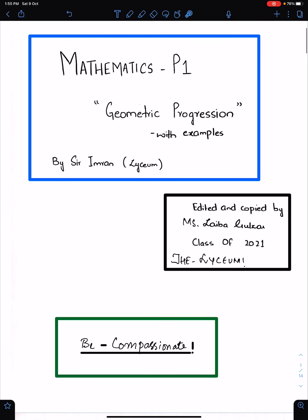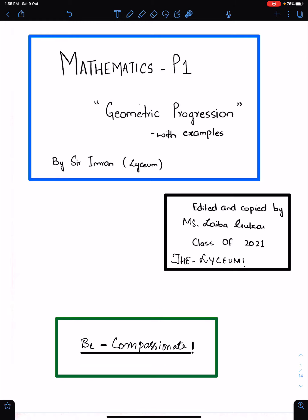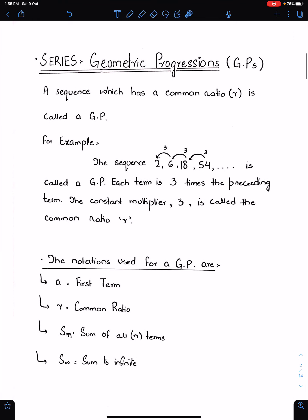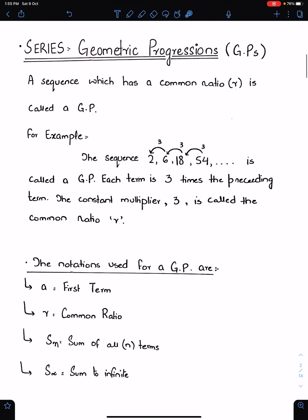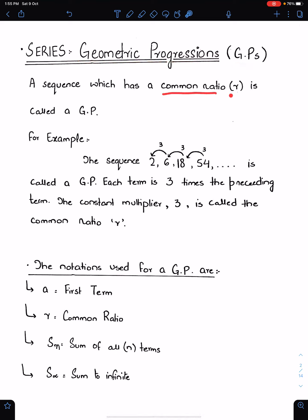An important advice for me and for everyone: we must be compassionate. Geometric progression, or GP — a sequence which has a common ratio R is called a GP.